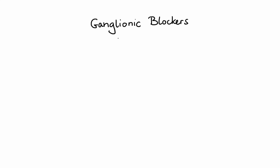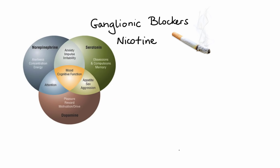The second group of cholinergic antagonists are ganglionic blockers. The main agent in this group is nicotine, the main component of cigarette smoke. Although nicotine is a cholinergic agonist, it is also considered a functional antagonist because of its ability to stimulate and then block cholinergic function. Nicotine acts on the nicotinic receptors of both parasympathetic and sympathetic autonomic ganglia. Its effects result from increased release of neurotransmitters such as dopamine, serotonin, and norepinephrine.